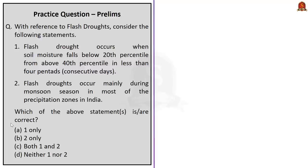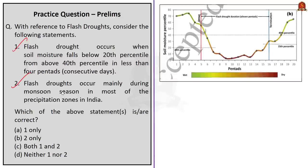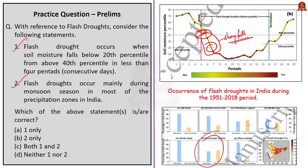With reference to flash droughts, consider the following statements. Statement 1: Flash drought occurs when soil moisture falls below the 20th percentile from above the 40th percentile in less than 4 pentads. Statement 2: Flash droughts occur mainly during monsoon season in most of the precipitation zones in India. Both statements are correct. Statement 1 is verified by the graph showing soil moisture decreasing from the 40th percentile to below the 20th percentile in not more than 4 pentads — a pentad being 5 consecutive days. Statement 2 is also correct as flash droughts occurred mainly during the monsoon season. So the correct answer is option C — both 1 and 2.